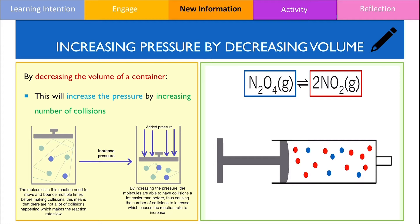By changing the volume of a system, Le Chatelier's principle states that the system will partially oppose this change. Let's look at an example on the right to see how decreasing volume affects the equilibrium mixture.